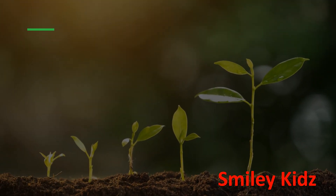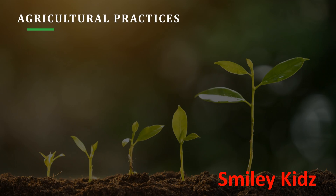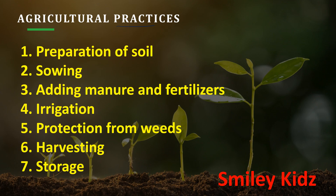Cultivation of crops involves several activities undertaken by farmers over a period of time. These activities are referred to as agricultural practices. The activities are: preparation of soil, sowing, adding manure and fertilizers, irrigation, protection from weeds, harvesting, and the last step is to store the crop.